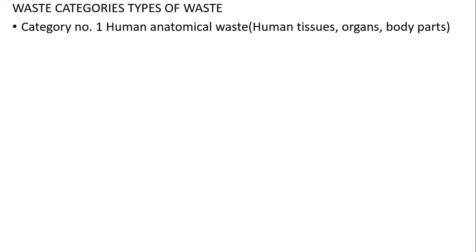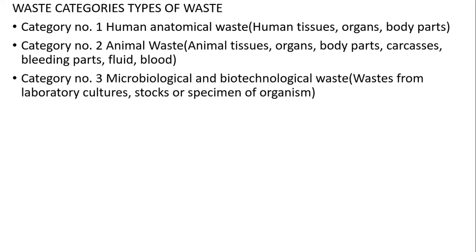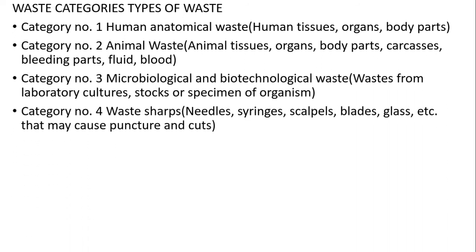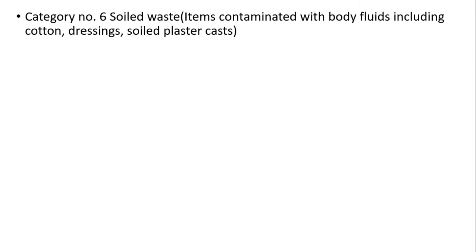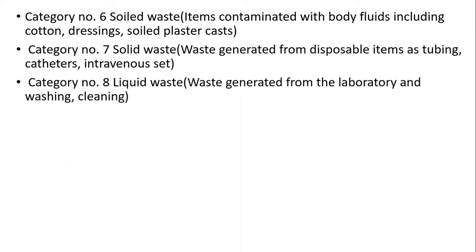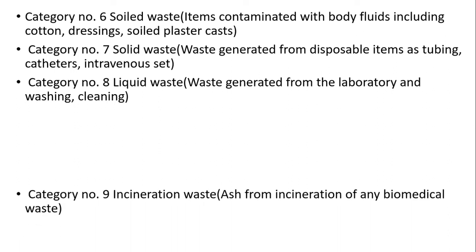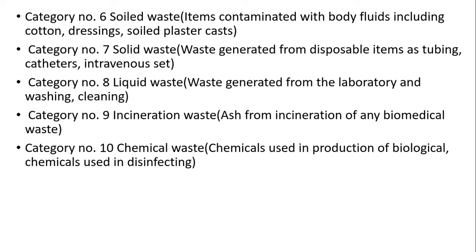Waste categories: category 1 — human anatomical waste; category 2 — animal waste; category 3 — microbiological and biotechnological waste; category 4 — waste sharps like needles and syringes; category 5 — discarded medicines and cytotoxic waste; category 6 — soiled waste; category 7 — soiled waste with general disposable items like catheters and intravenous sets; category 8 — liquid waste; category 9 — incineration waste, ash from incineration; and category 10 — chemical waste, chemicals used in production of biologicals and disinfectants.